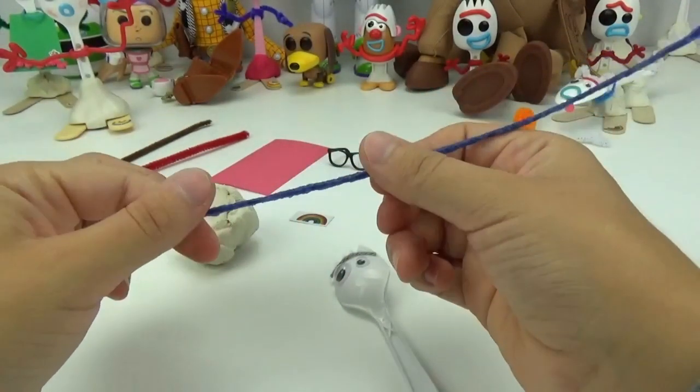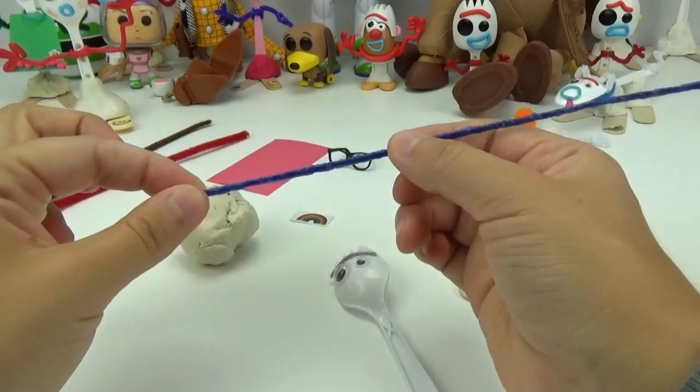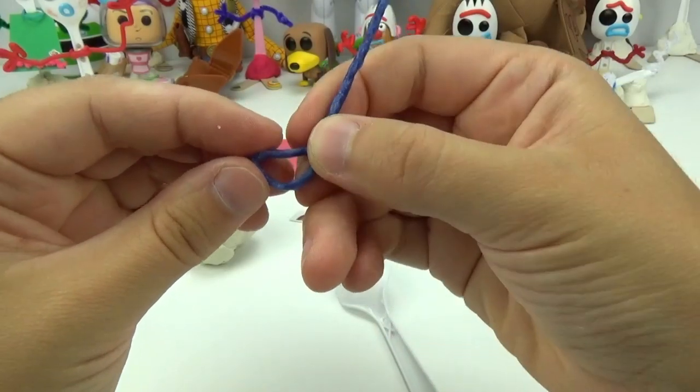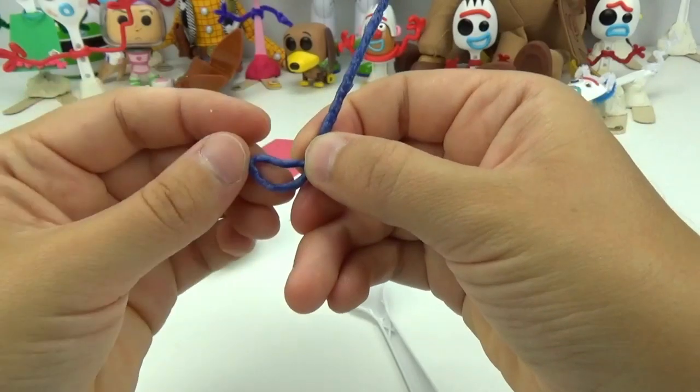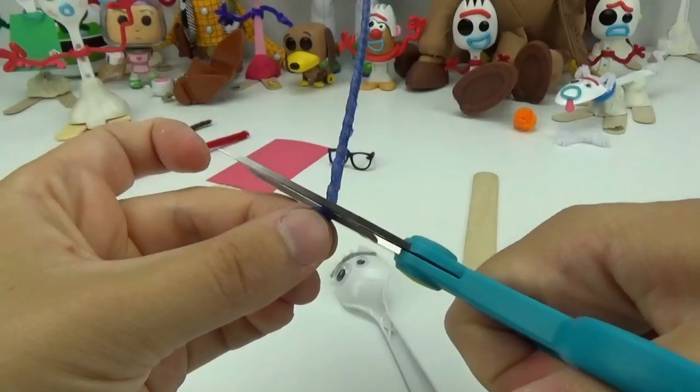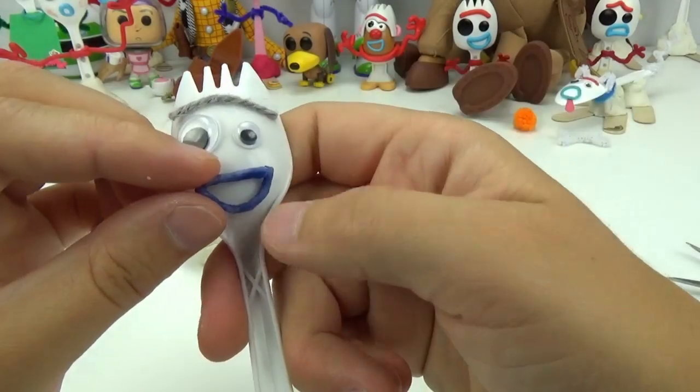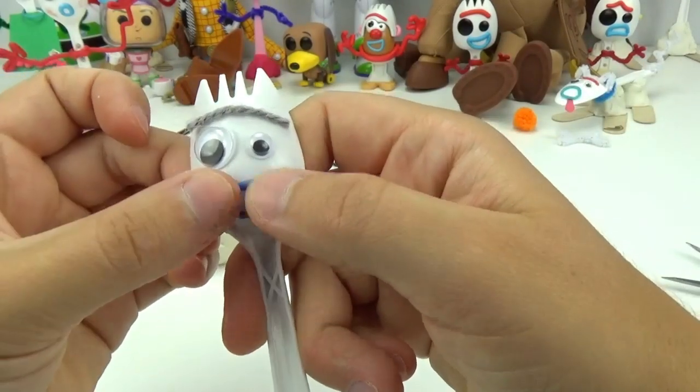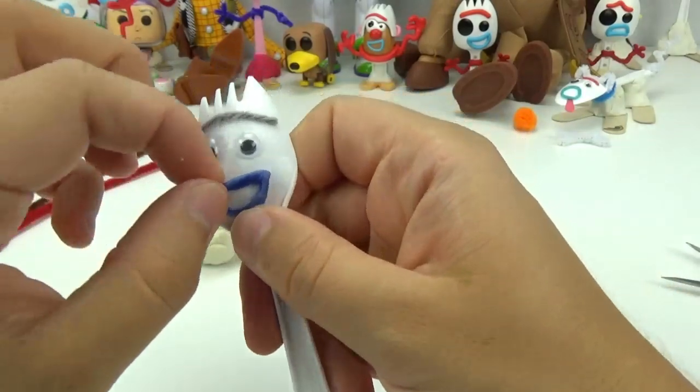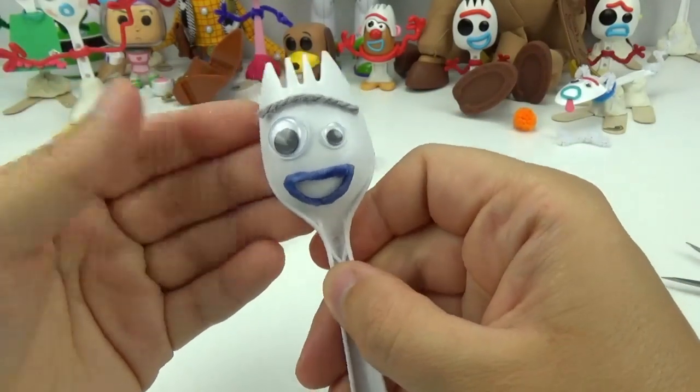With the blue wax stick, I am going to be using this to form his mouth. I want him to be smiling, so I am going to do a shape like this. I will place that on right here. And voila! He has a mouth.